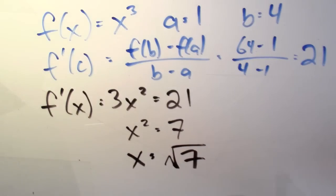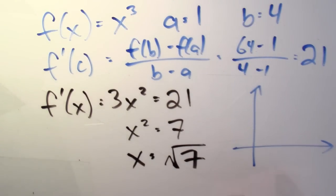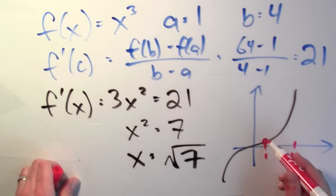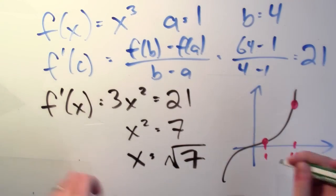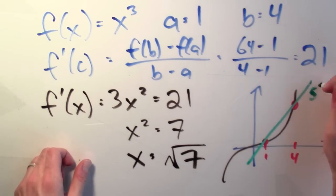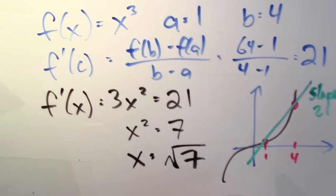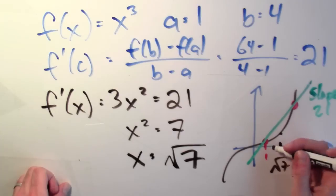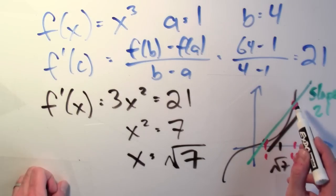What I've really accomplished here — if I make a little graph — here's the xy plane, and here's a sketch of the cubed function. Here's the point 1 and here's the point 4. Here's 1 comma 1 and here's 4 comma 64. The slope of the line through those two points is 21. What I've managed to do is find that at the square root of 7, the slope of the tangent line is exactly the same as the slope of the secant line through (1,1) and (4, 64).